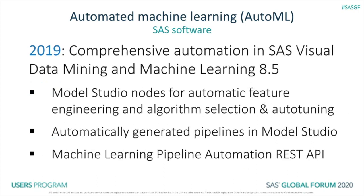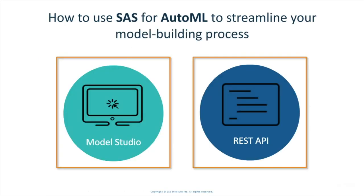So this talk will be focusing on the tools for AutoML that are new in this latest release. In Model Studio, there are two new nodes for automation — one for feature engineering and one for model algorithm selection and hyperparameter tuning — as well as the ability to have an entire machine learning pipeline generated dynamically for your specific data. This AutoML can be accessed through Model Studio if you want to use a visual interface, and also via a REST API that comes with SAS Visual Data Mining and Machine Learning for you to embed into your own applications.